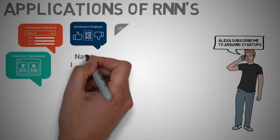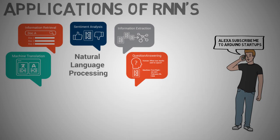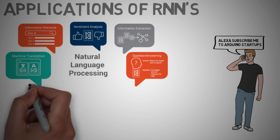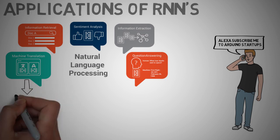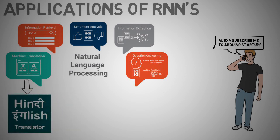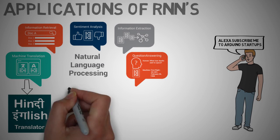Language modeling and generating text. Given a sequence of words, we want to predict the probability of each word given the previous word. Machine translation. Machine translation is similar to language modeling in that our input is a sequence of words in our source language, for example, Hindi, and we want to output a sequence of words in our target language, for example, English.